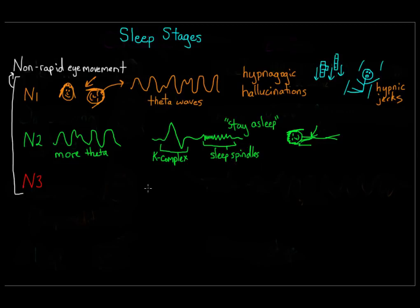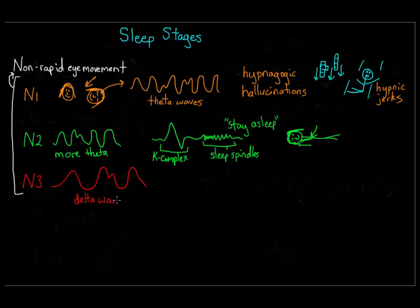Beyond N2, we have N3, our last non-REM stage. N3 is also called slow wave sleep because brain waves are very slow — these are called delta waves and have a range of about 0.5 to 2 hertz, so roughly a half to two oscillations per second. When you're in N3 sleep you are very much dead to the world and really difficult to wake up, and if you walk or talk in your sleep, this is the stage where those things happen.